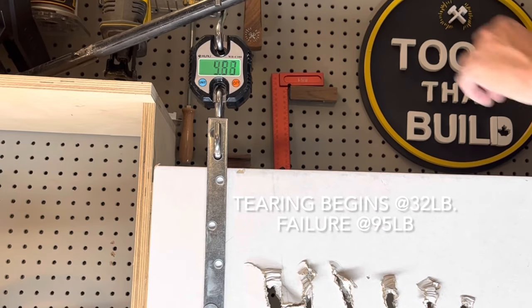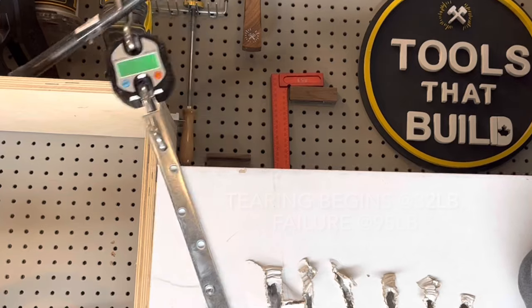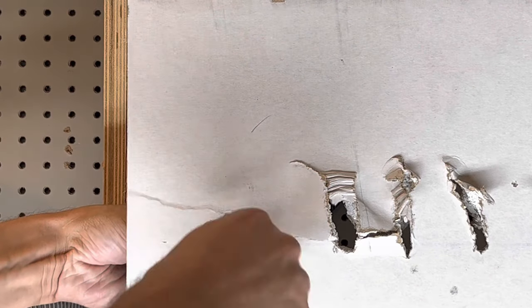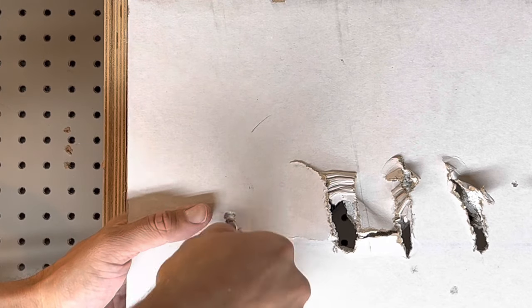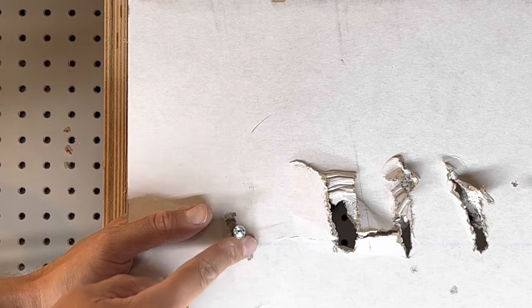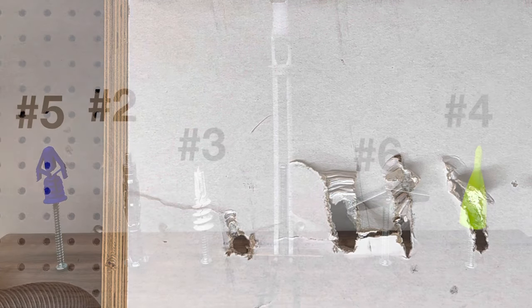Now this anchor is designed for an outward pull, not side loading like these tests. Since we are side loading, the toggle began to fail at only 32 pounds with complete failure at 95. The reason is it's a small bolt in a large hole, so side loading is really only testing the bolt on the side, not the anchor. If we were pulling down from the ceiling, so the direction away from the drywall toward the camera, would be a different story, which of course would require different tests and different competition.